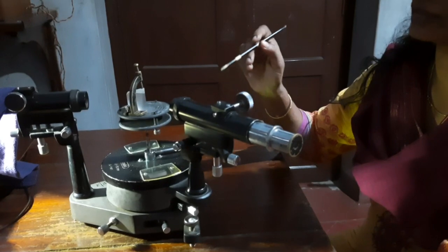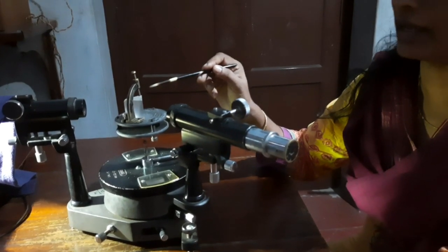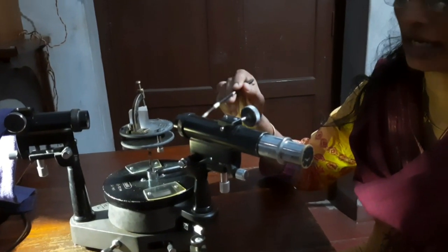Right again, now it has got retraced. So before retracing, I would like to stop it once again. Okay, it goes right, right, right and now it has stopped. This is my minimum deviation position. So stop it here. Now the prism is in a minimum deviation position for violet light.